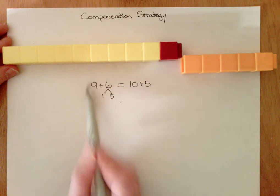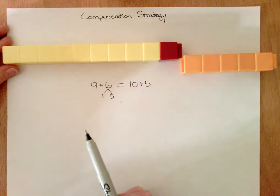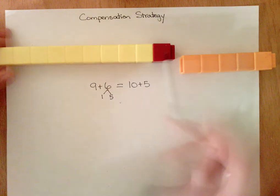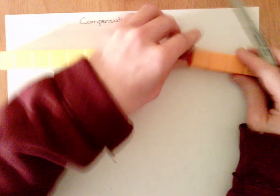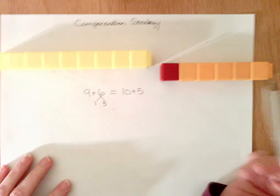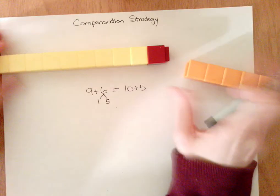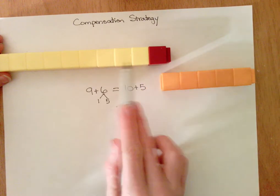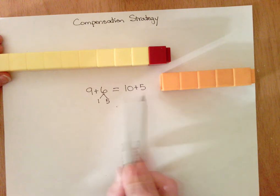So we added nine and one to make ten and added the five after it. This one block, in this case, this one cube that was part of the six, we compensate. We move it over to have the same value but in an easier problem.